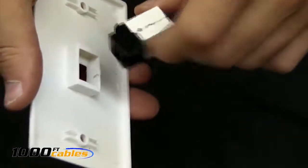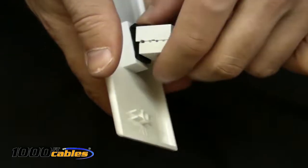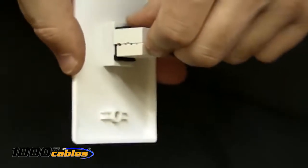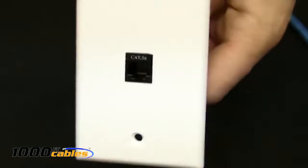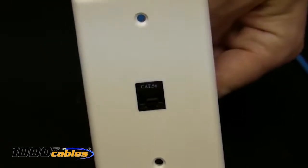Now you're going to take the keystone jack, you're going to put the bottom part, the nub, in first, and you're going to just clip it into place, like so. You've got your completed Cat5 keystone jack. You can purchase any of these supplies from us.